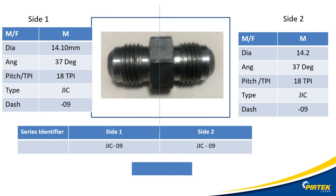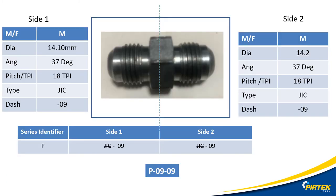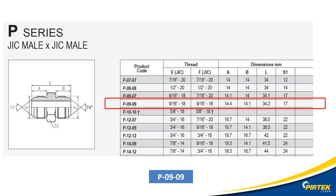We nearly have all the information we need — all we need now is the series identifier. We know it's a straight fitting and JIC both ends, so it looks like it's a P series. With the series identifier and the dash numbers, we have our PERTEC adapter part number. Here's the P-0909 from the PERTEC catalogue, which is a 9/16-18 TPI UNF thread.